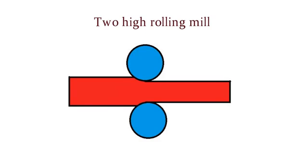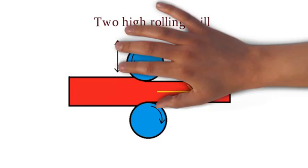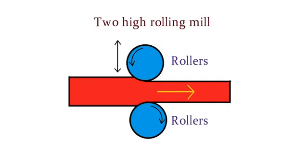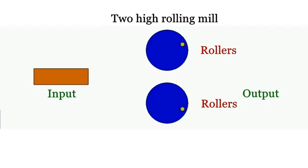First is two high rolling mill. This is the simplest type of rolling mill setup in which two rollers are used. The distance between two rollers can be adjusted according to the metal thickness. The lower roller is fixed whereas upper roller has vertical motion to adjust the distance between two rollers.